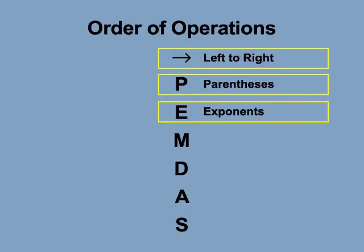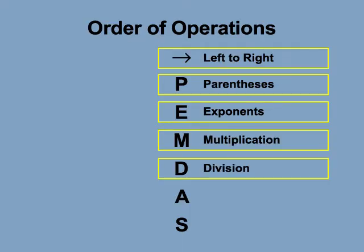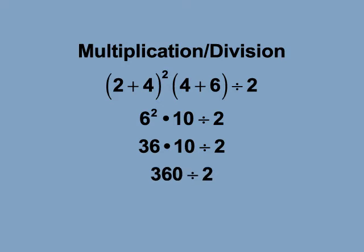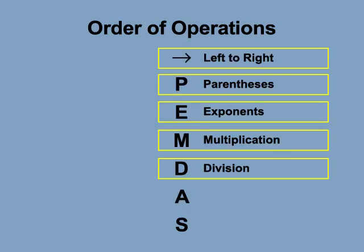The next rule is that after parentheses and exponents, perform multiplication and division. Look at this expression: the quantity 2 plus 4, squared, times the quantity 4 plus 6, divided by 2. Start with the terms in parentheses, which results in 6 squared times 10, divided by 2. Next do exponents, which results in 36 times 10, divided by 2. The result is 360 divided by 2, which simplifies to 180.